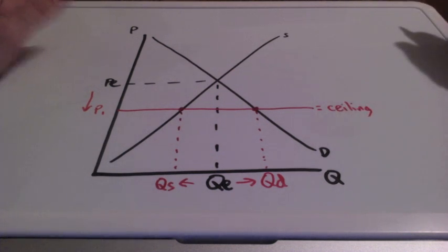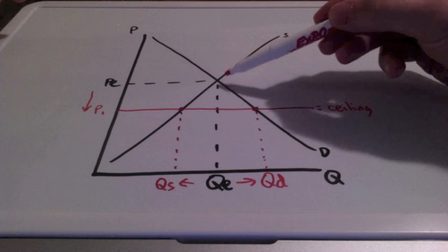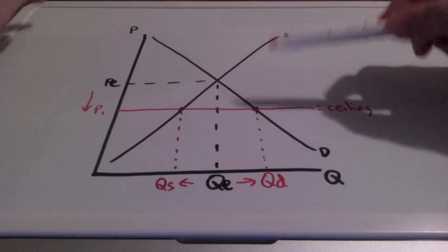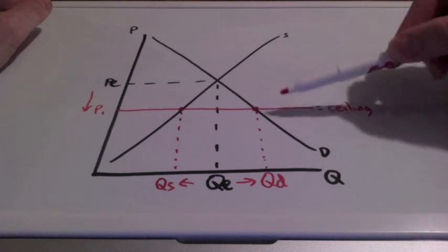For it to be binding or effective, it must be below the equilibrium price. The price cannot go above the ceiling.